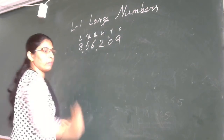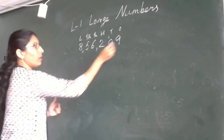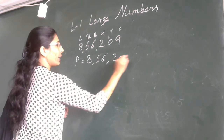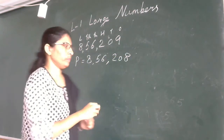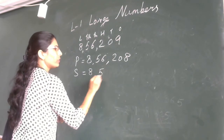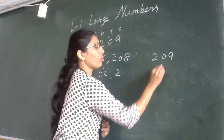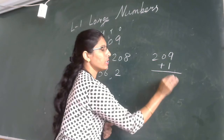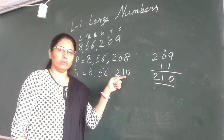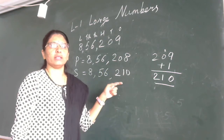Using the same number — eight lakh fifty-six thousand two hundred and nine — the predecessor is found by subtracting one from the ones place: nine minus one is eight, so the predecessor is eight lakh fifty-six thousand two hundred and eight. The successor is found by adding one: nine plus one is ten, so the ones becomes zero and we carry one — giving eight lakh fifty-six thousand two hundred and ten.